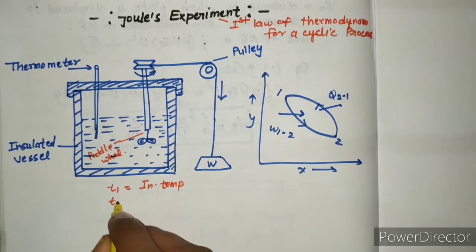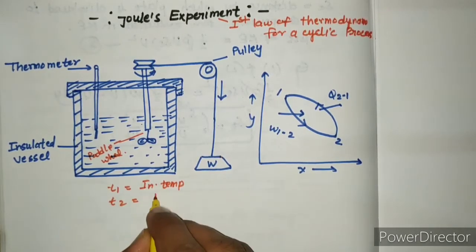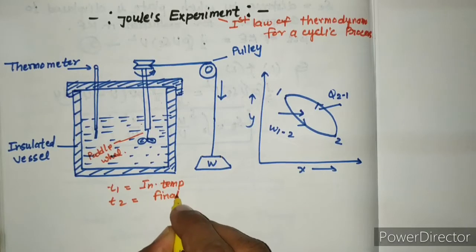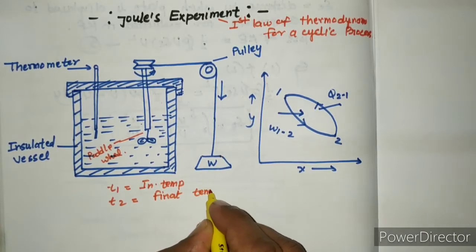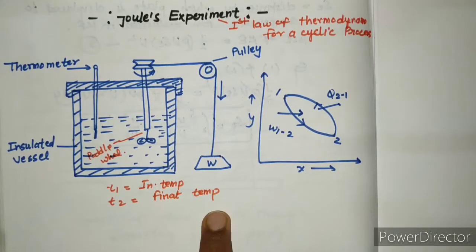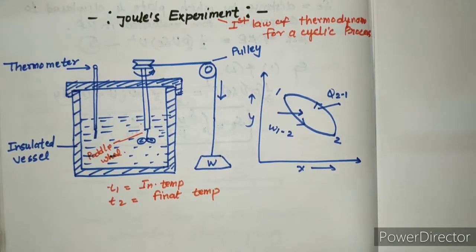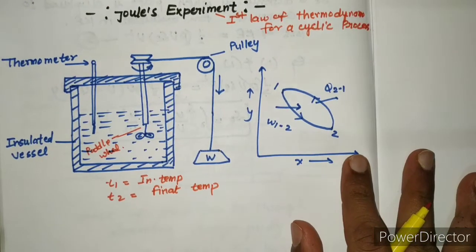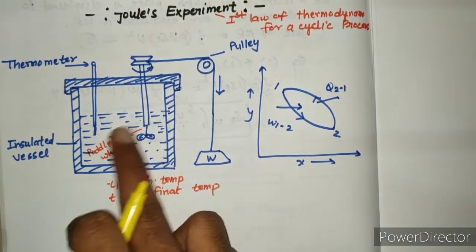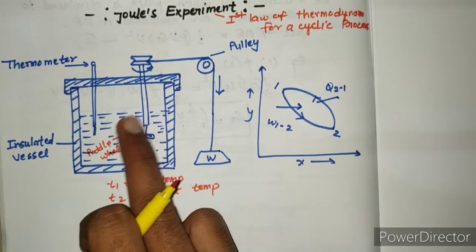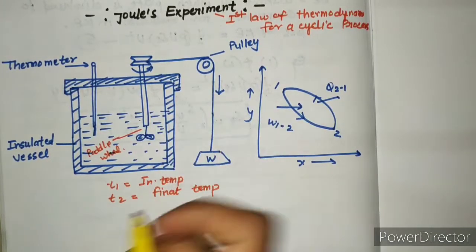And T2 temperature, this is called the final temperature, final water temperature after work is supplied. And in this system, pressure is constant. This is atmospheric pressure.